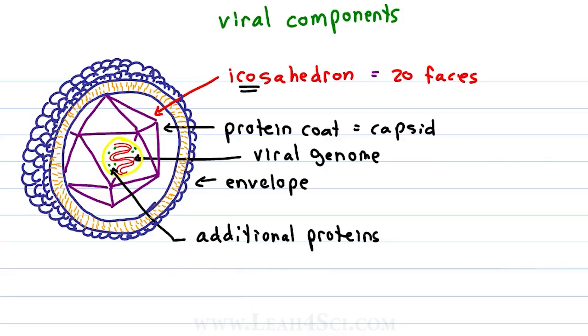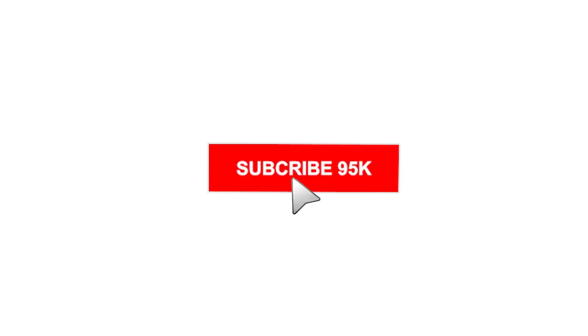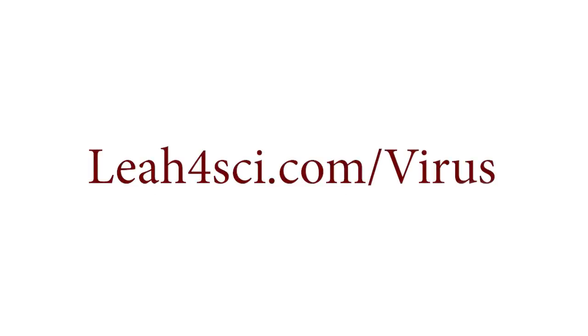How does having this structure allow the virus to infect a cell and ultimately hijack it to replicate? That's exactly what we're going to discuss in the next video, where we look at viral reproduction including the lytic and lysogenic stages. Make sure to give this video a thumbs up, subscribe so you don't miss any new videos, and visit leah4sci.com/virus.